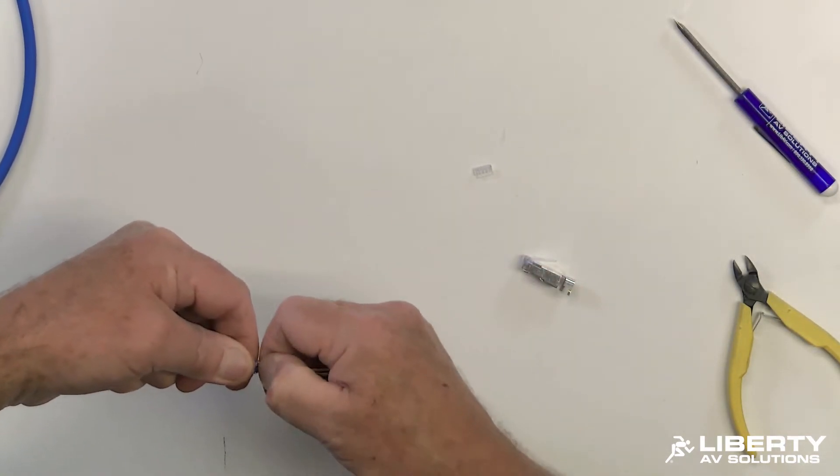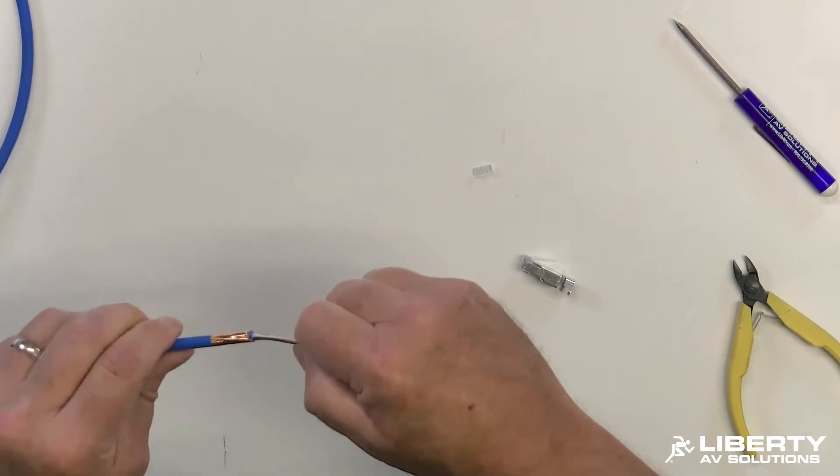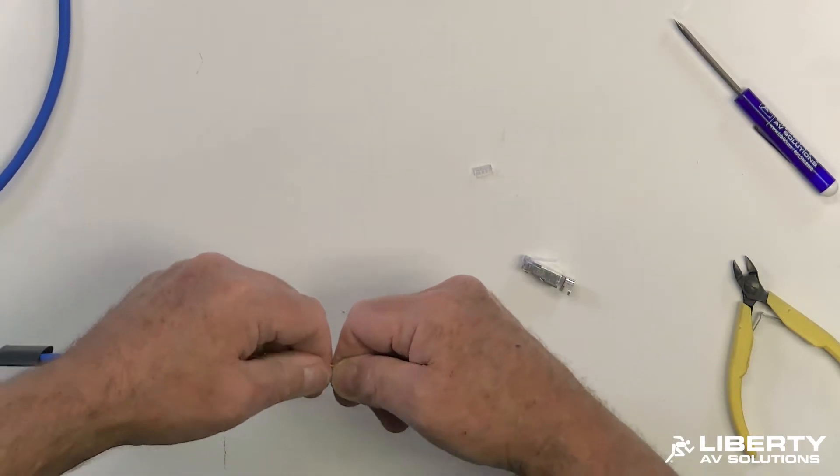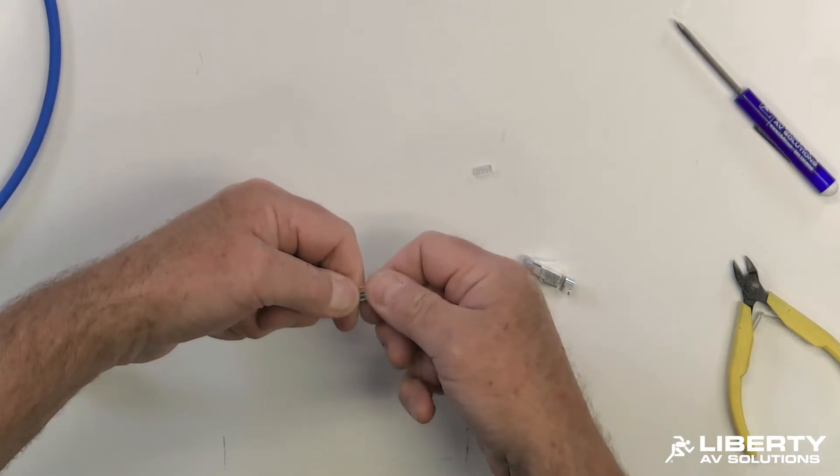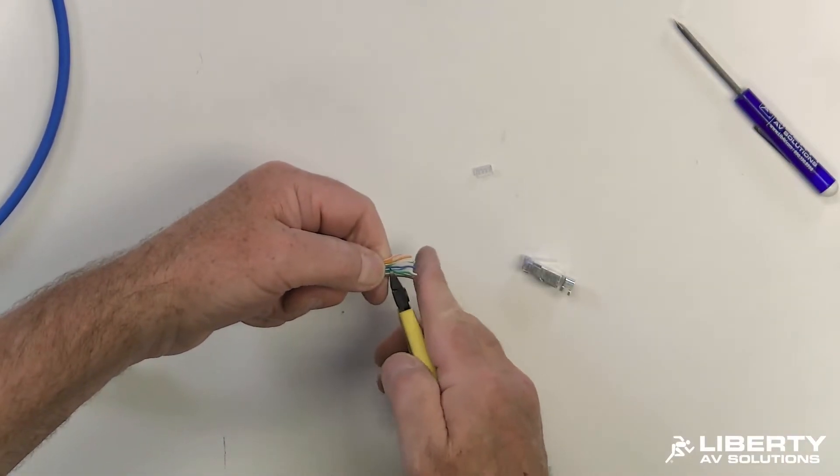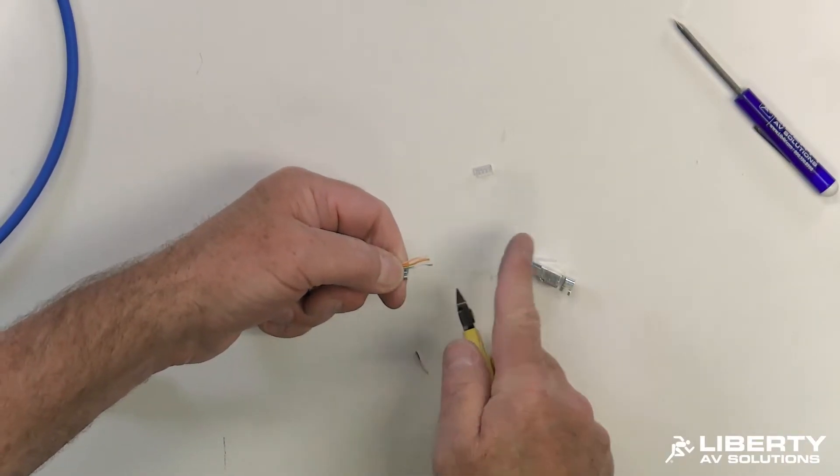Then you want to go ahead and kind of straighten these out. Make sure they're really nice and straight. And then where they start to get a little rough here at the edge, you want to go ahead and cut these off nice and flush. You can put your finger over the wires to stop them from flying everywhere.